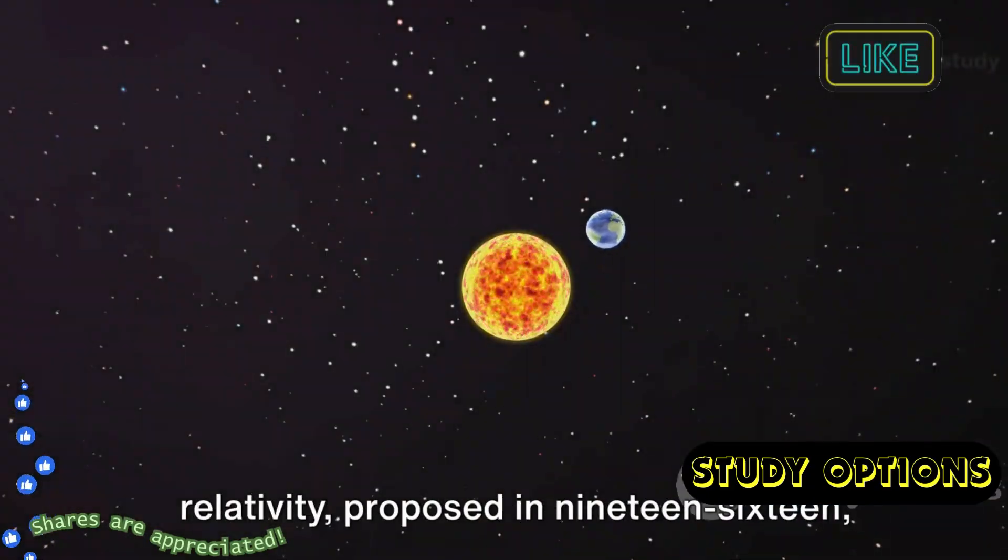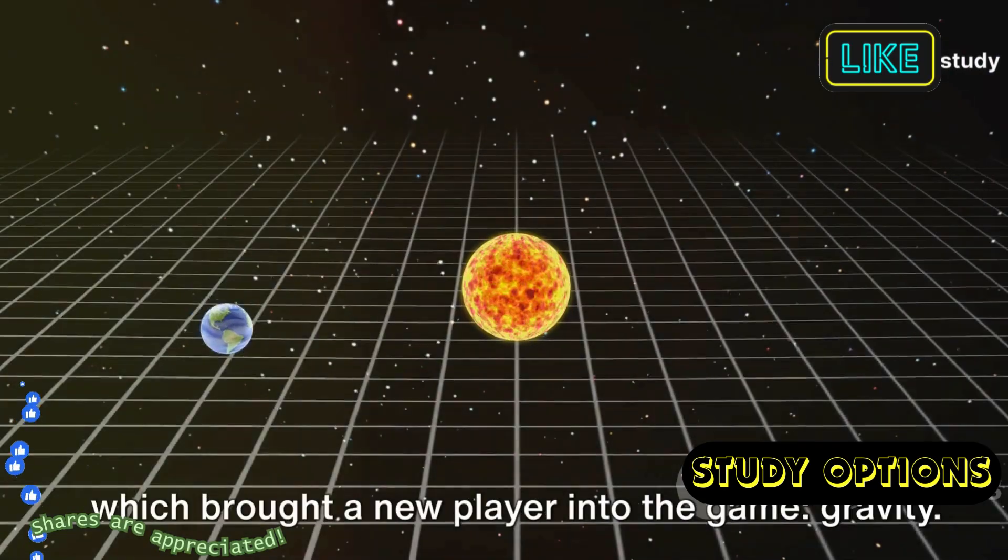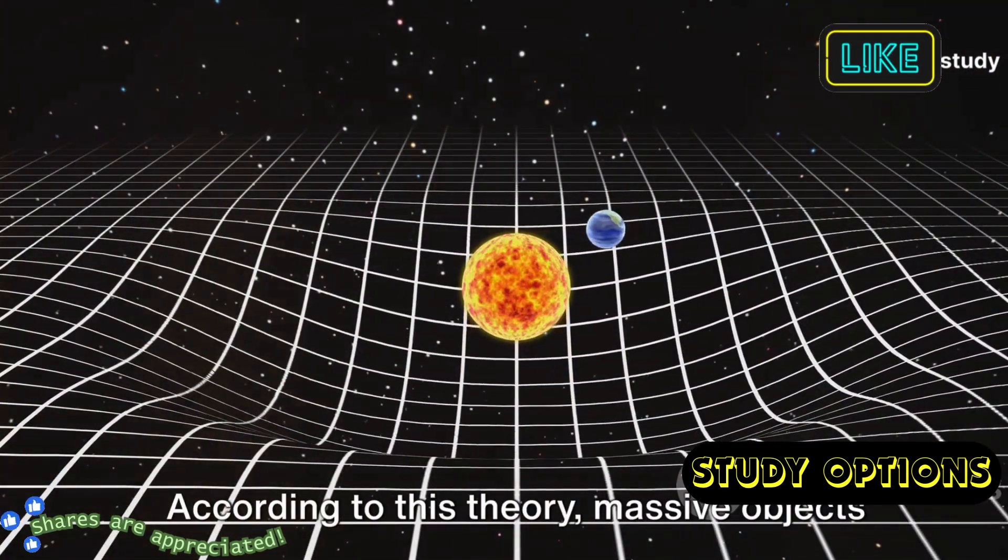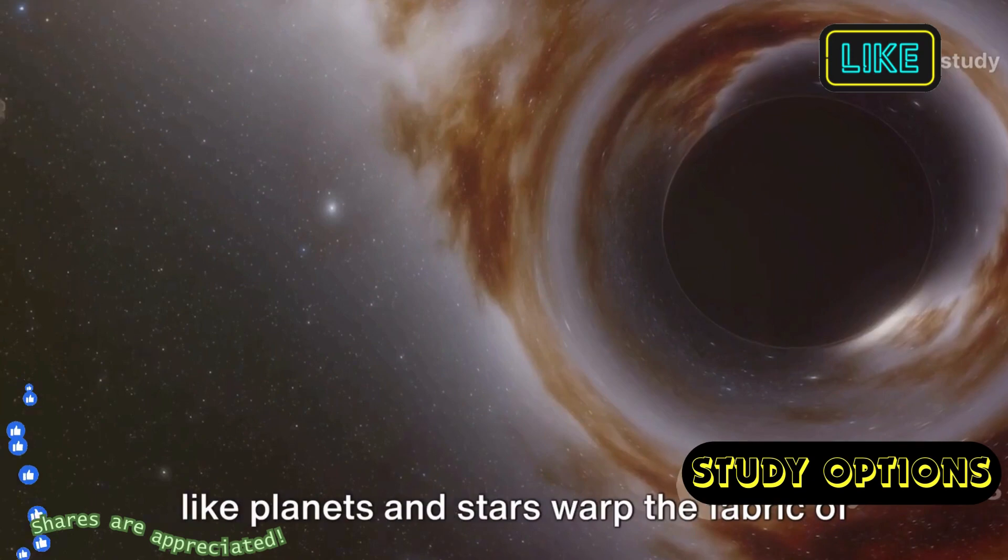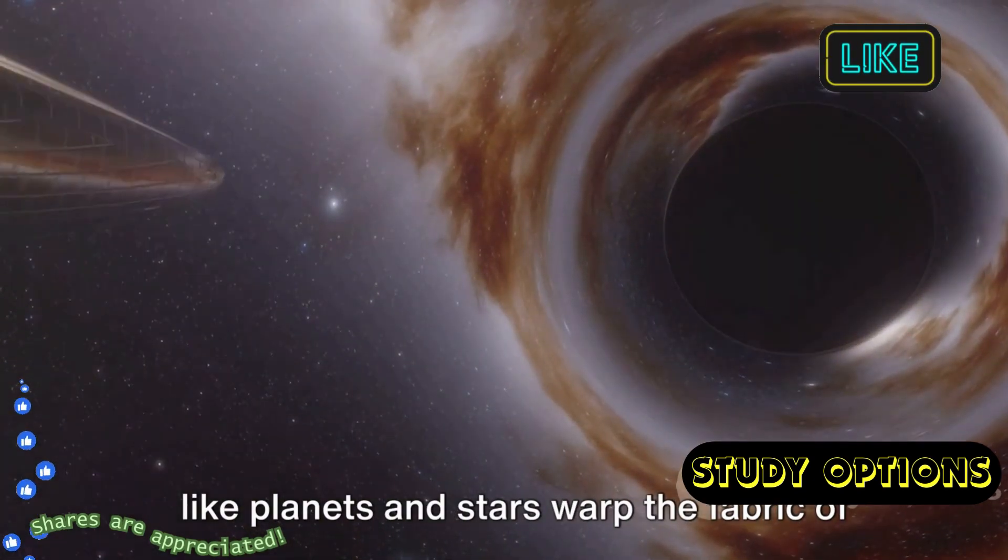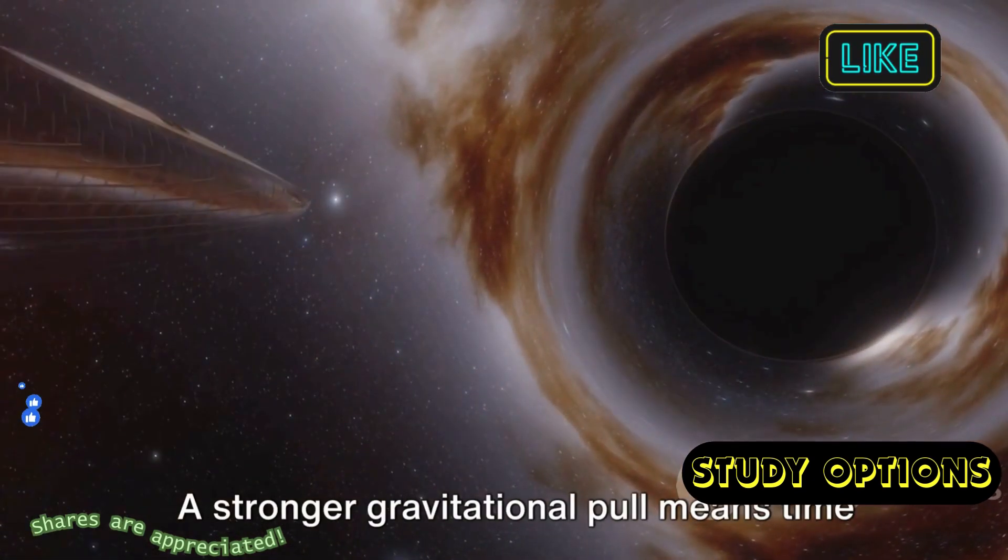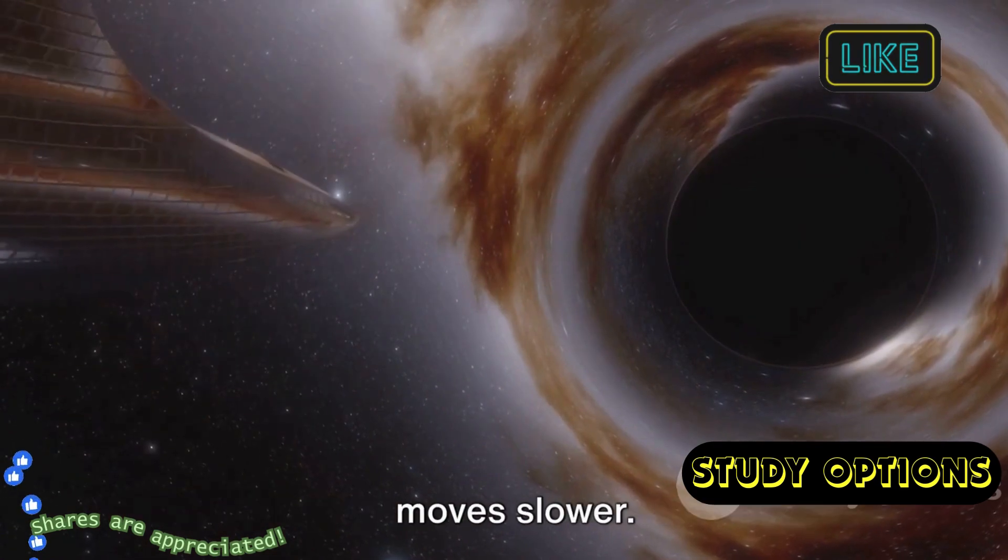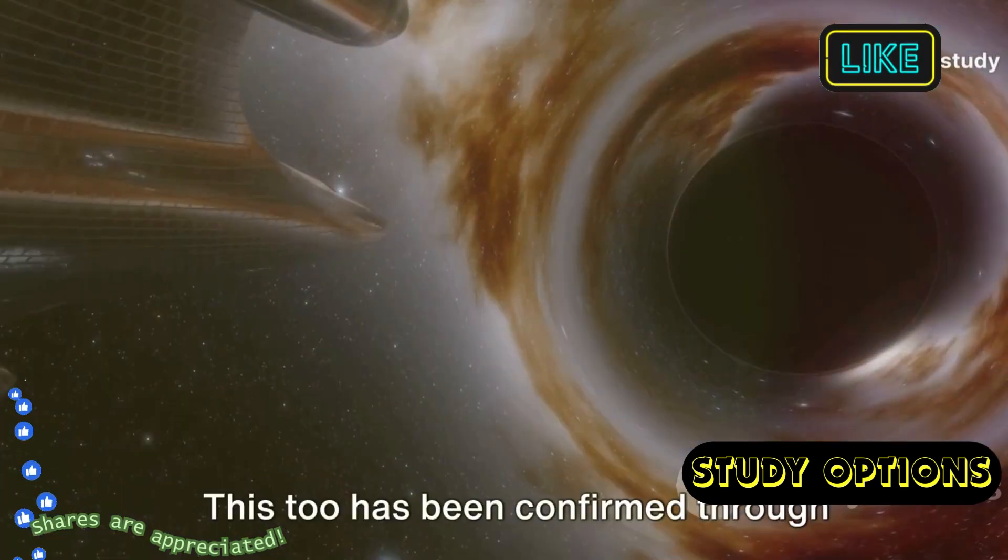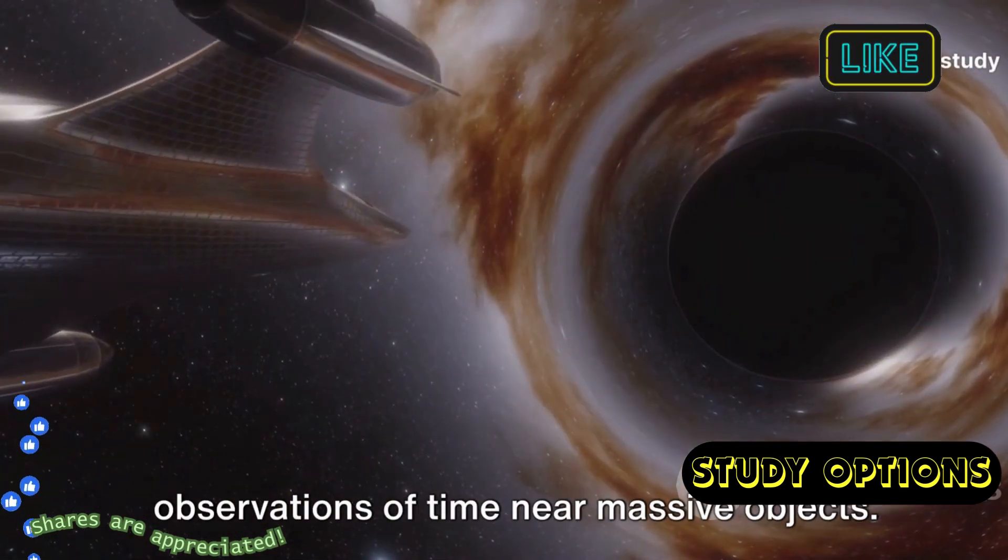Then there's the general theory of relativity, proposed in 1916, which brought a new player into the game: gravity. According to this theory, massive objects like planets and stars warp the fabric of space-time around them. A stronger gravitational pull means time moves slower. This too has been confirmed through observations of time near massive objects.